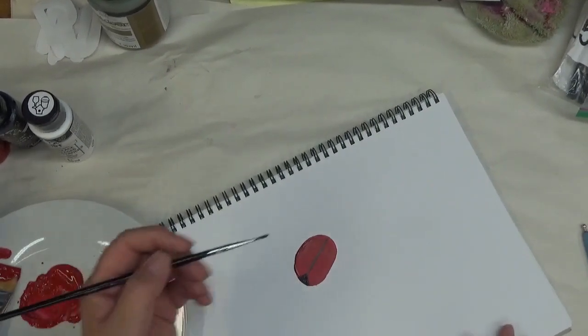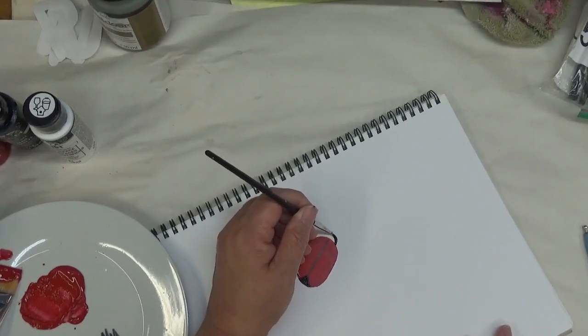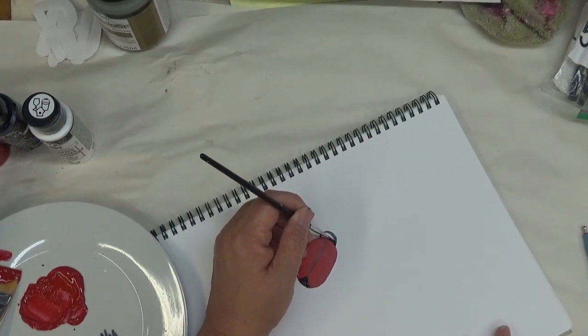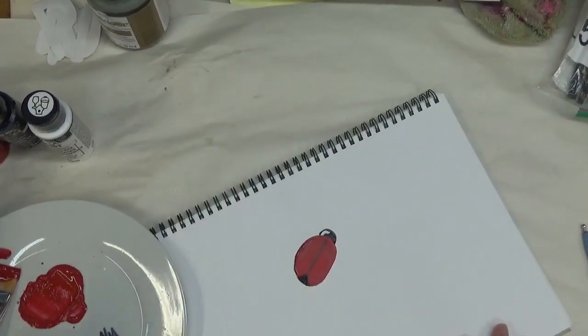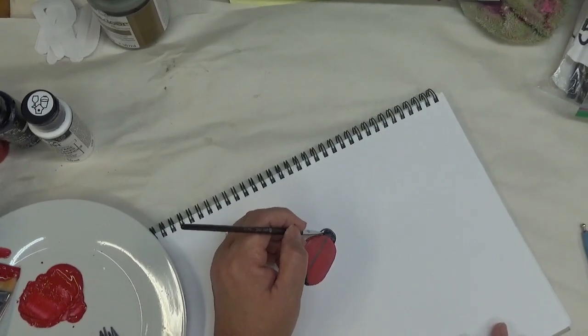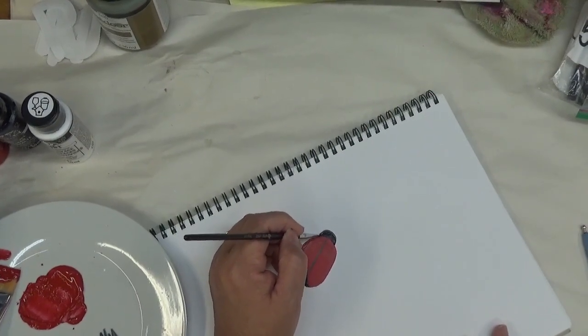Alright, so then I'm going to take the same liner brush and just make kind of like a partial circle, and this will be the ladybug's head. I was going to say this little guy's head, but it'll be the ladybug's head.